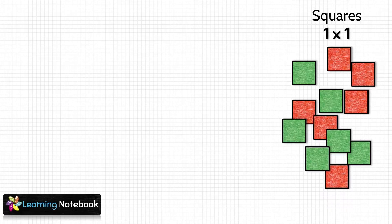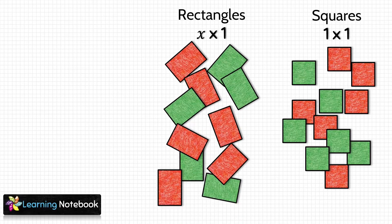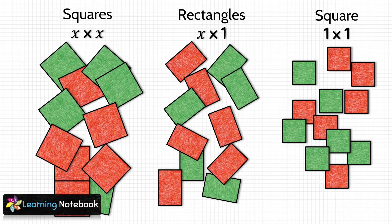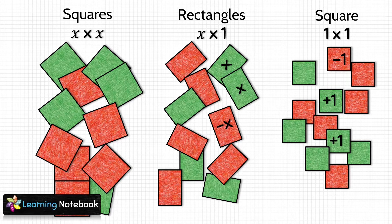So we have cut out small squares of dimension 1×1 units, rectangles of dimension x×1 units, and big squares of dimension x×x units. In these cut-outs, we will use the green side to represent a positive term and the red side to represent a negative term. For small squares, the green side represents 1 and the red side represents minus 1. For rectangles, the green side represents x and the red side represents minus x. For big squares, the green side represents x square and the red side represents minus x square.